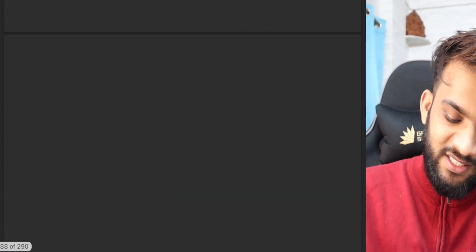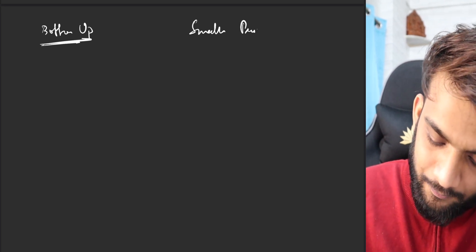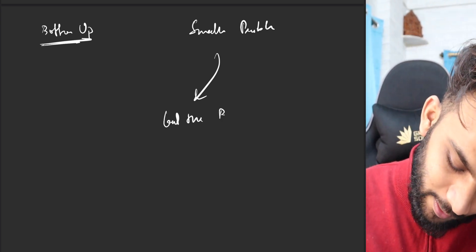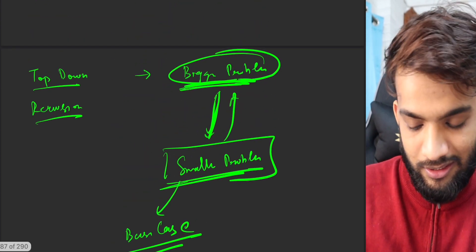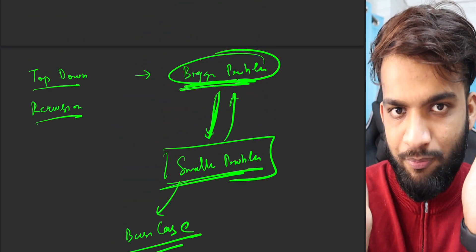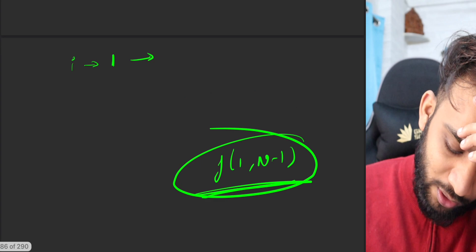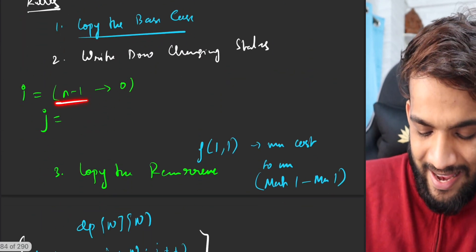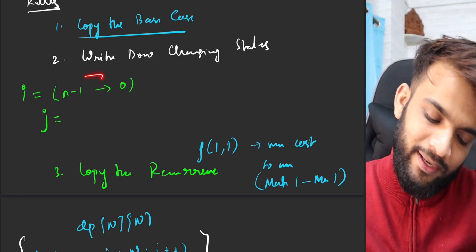What is bottom-up? It's the opposite. You take the smaller problem and build up, build up, build up to get the bigger one. The bigger one here is looking for a large set of matrices to be multiplied. So if i goes from n-1 down to zero — because you go from the bottom — i runs from n-1 to zero. That's very obvious since you build from the bottom up.